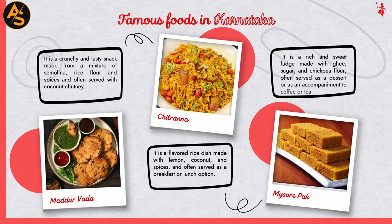Some other famous foods in Karnataka are Madurwara, Chitrana, and Mysore Pak. Madurwara is a crunchy snack made from a mixture of semolina, rice flour, and spices, often served with coconut chutney. Chitrana is a flavored rice dish made with lemon, coconut, and spices, often served as a breakfast or lunch option. Mysore Pak is a rich and sweet fudge made with ghee, sugar, and chickpea flour, often served as a dessert or accompaniment to coffee or tea.